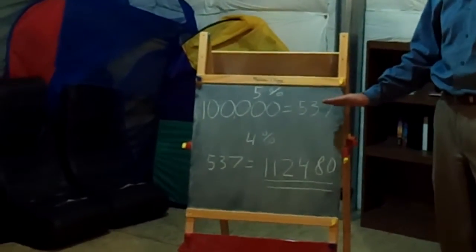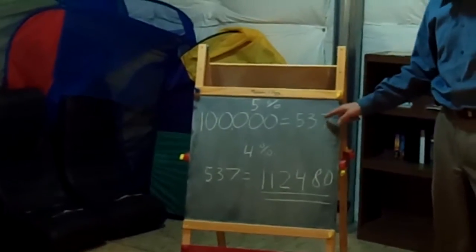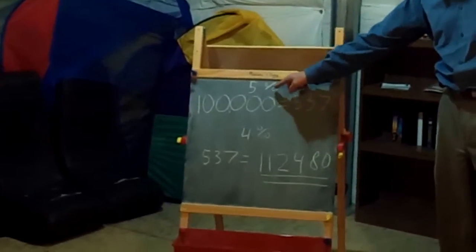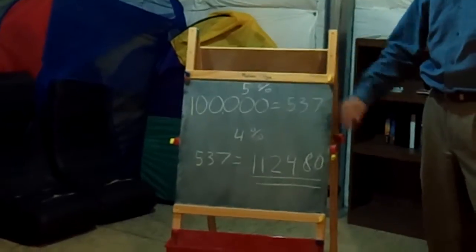I've had many buyers who actually save money by buying. So that's $537 on a $100,000 loan, 5% interest rate, 30-year fixed.